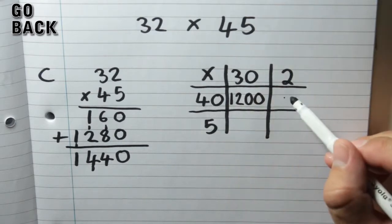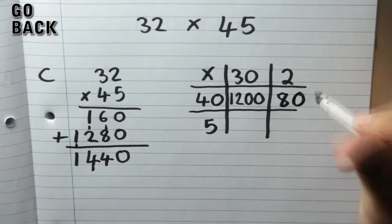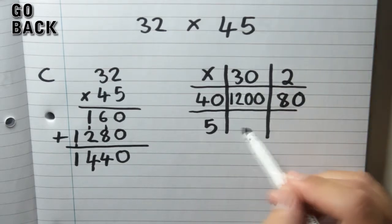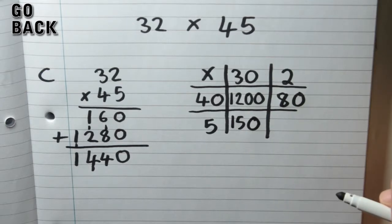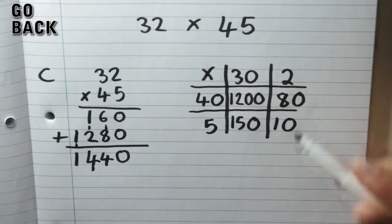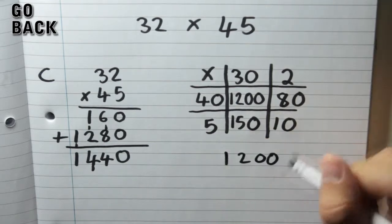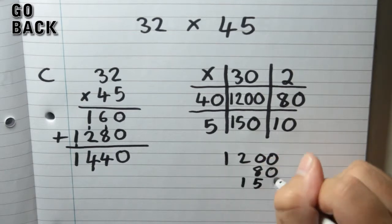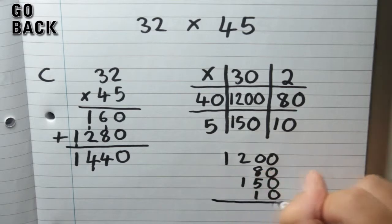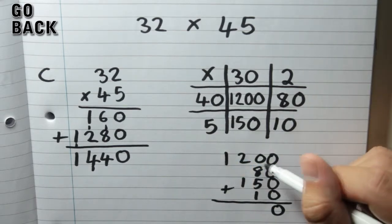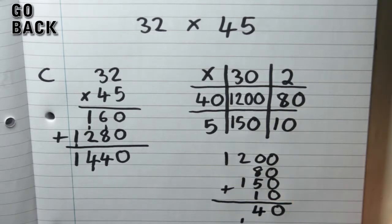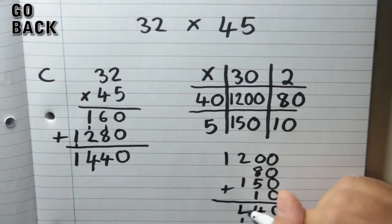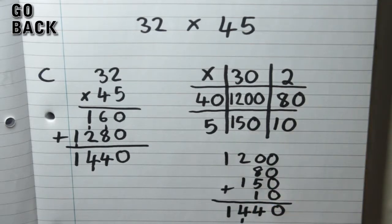To get this one, you do 2 times 40: 2 times 4 is 8, then add the 0. Next one: 30 times 5 — 3 times 5 is 15, add the 0, giving 150. And 2 times 5 is 10. Now we're going to add up our four answers. All the zeros give 0. 0 plus 8 is 8, plus 5 is 13, plus 1 is 14 — carry the 1 — giving 4 there. Then 2 plus 1 plus 1 is 4, and 1 on its own is 1, giving us 1,440 — the same as before.